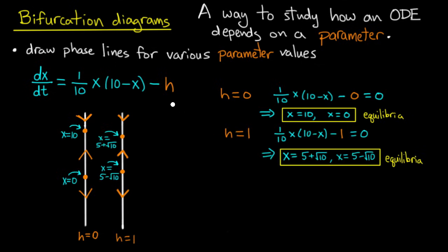And how do I know that? Well, I set h equal to 1 in this equation, and I get 1/10 x times 10 minus x minus 1 equals 0. And I solve for the two x values, which are the equilibria. And those guys are at x equals 5 plus root 10 and x equals 5 minus root 10. So you see that they've moved in a little closer, just inched in toward 5.